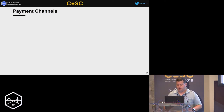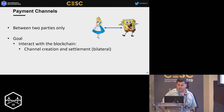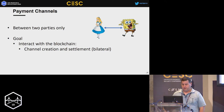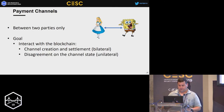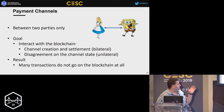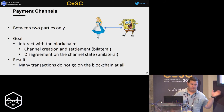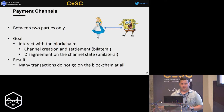Let's do a deep dive into payment channels. Payment channels are between two parties only — Alice and Bob. The goal is to interact with the blockchain only on two occasions: when they create the channel and when they settle it. But either side should be able to unilaterally place a transaction on-chain and settle unilaterally. All intermediary transactions between channel creation and settlement don't go on the blockchain at all, reducing the number of transactions that every node must process.